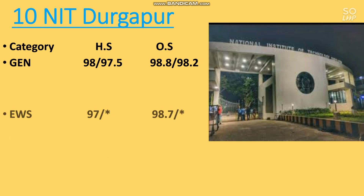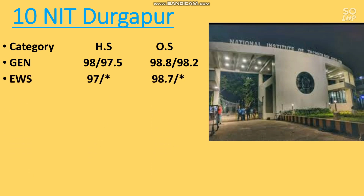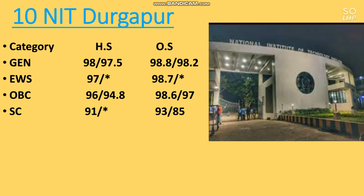For EWS other state male, the cutoff is 97 percentile. For OBC other state male it is 98.6. Wherever you find a star mark, it means that category is not reserved for EC branch in that NIT. For SC it is 98 and for ST it is 93 percentile. ST home state is 62 percentile. This is all about NIT Durgapur; you can check the home state and female cutoffs by pausing the screen.